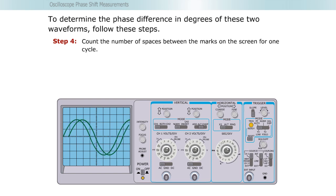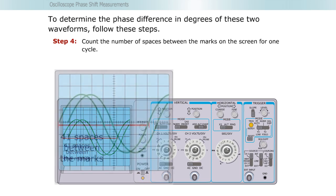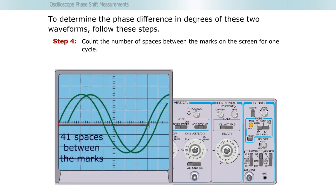Step four, count the number of spaces between the marks on the screen for one cycle. Here there are 41 spaces between the marks.